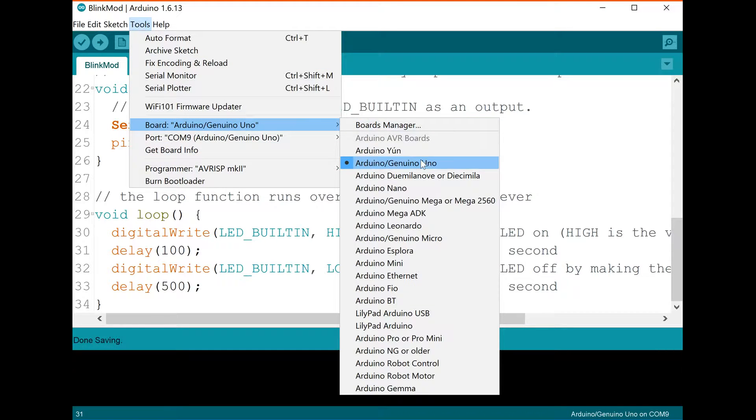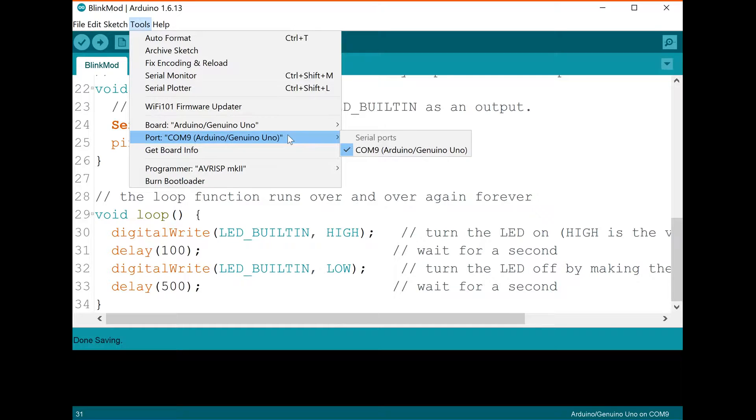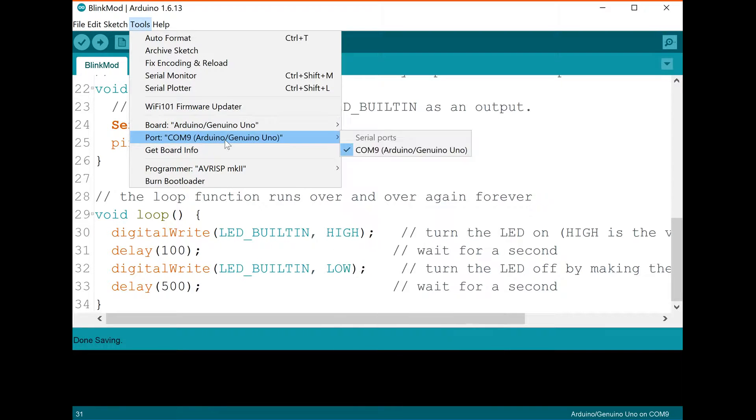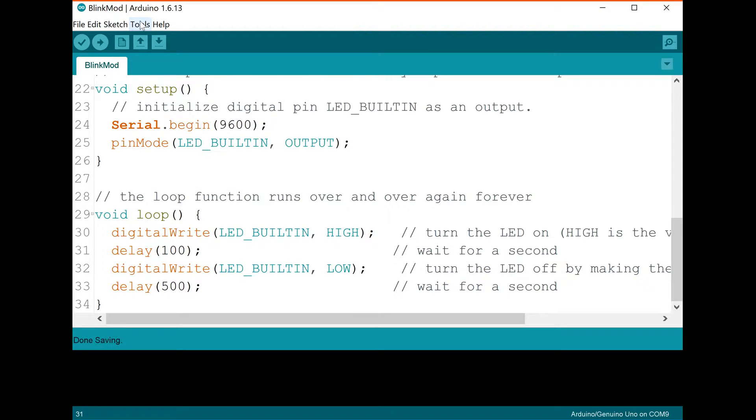And so in your tools, under board, you need to make sure you have the correct chip set. And so right now, the one I'm using for this video is the Uno. But you might have this one, or you might have any of these chips. So make sure you have the right one. Make sure your port is set as well. Mine's set to COM9. Just make sure it's set and that your programmer is this one. Okay, so that's all you need to do. And then once you're done with that, just click upload. And it will upload.